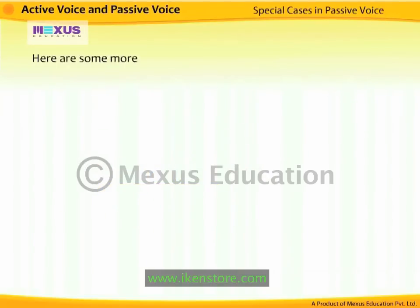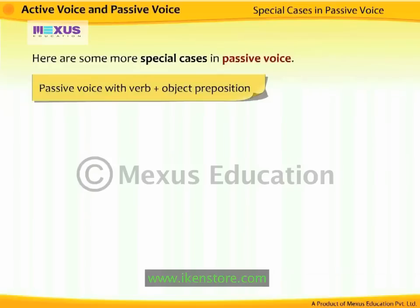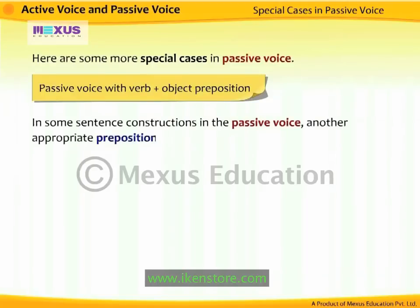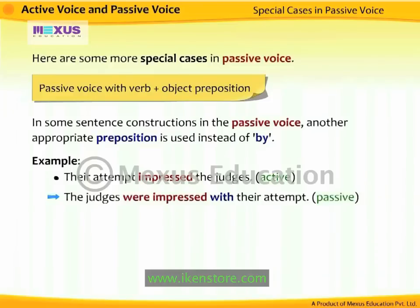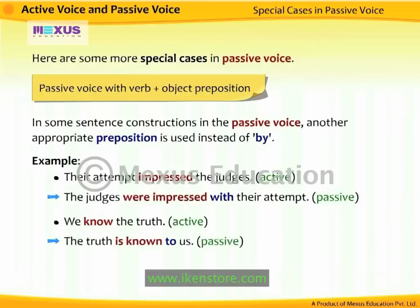Passive voice with verb plus object preposition: in some sentences, another appropriate preposition is used instead of 'by.' For example, 'Their attempt impressed the judges' becomes 'The judges were impressed with their attempt.' 'We know the truth' becomes 'The truth is known to us.' 'Simon married Rima' becomes 'Rima was married to Simon.'